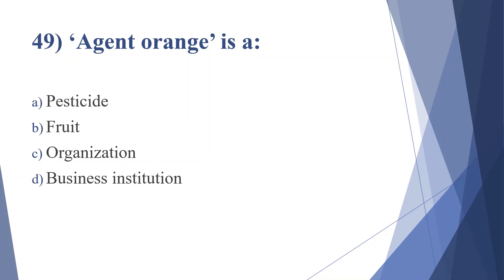Forty-ninth question: Agent Orange is a — option A: pesticide, option B: fruit, option C: organization, option D: business institution. Answer is option A, pesticide.